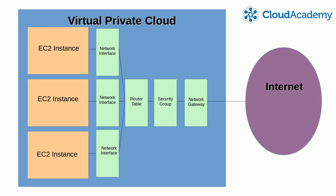Interface devices — every network computer has to have a network interface connection, whether it's wireless, Wi-Fi, or wired — cables and wireless connections, wireless routing devices, routers, routing architecture like subnets, network gateways, and firewalls, whether physical or software, are all critical elements of a traditional network.